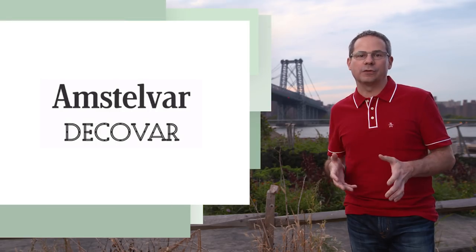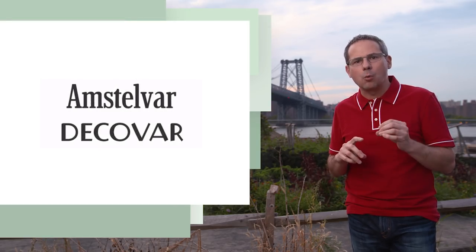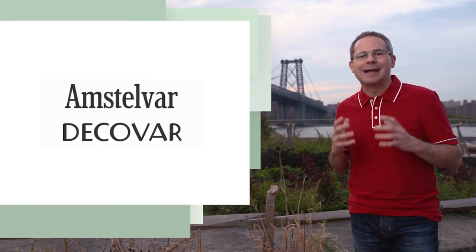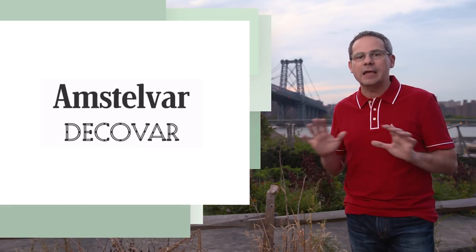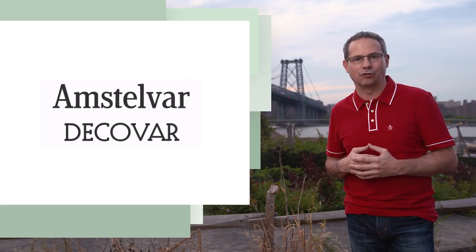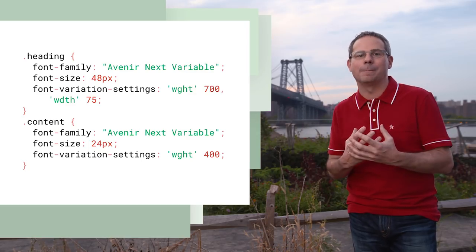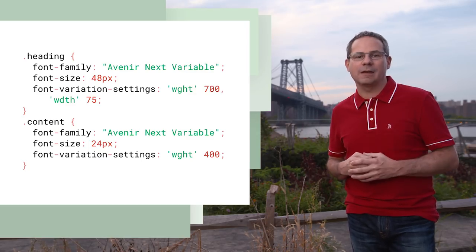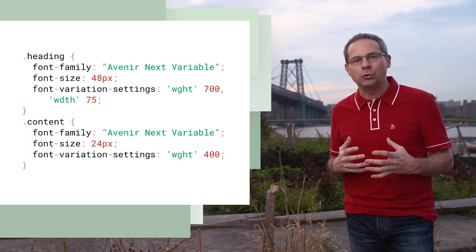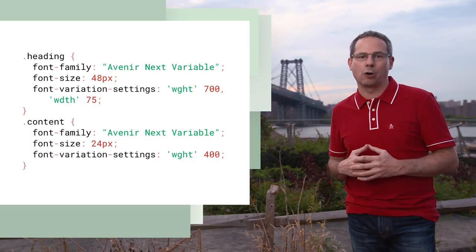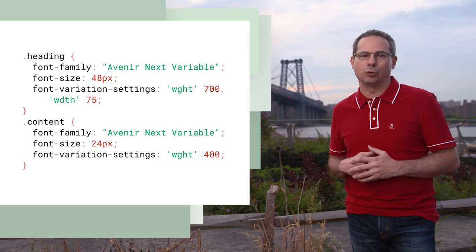An open-type variable font is the equivalent of multiple individual fonts that can be compactly packaged within a single font file. By adjusting certain CSS properties — stretch, style, weight, and more — they can easily be adjusted, providing an infinite number of stylistic variations. Those three fonts can now be combined into a single compact file. Open-type variable fonts give us a powerful new tool to create responsive typography and reduce page weight.